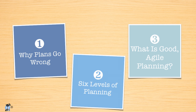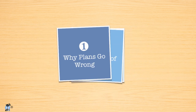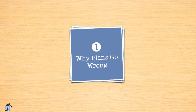In this first module, we're going to look at three main topics. In the first two videos, we'll look at why plans so often turn out wrong. Next, we'll see the six levels of planning that occur in an Agile organization, and we'll see which ones Agile teams participate in. In the final video of this module, we'll define what makes a good Agile plan.